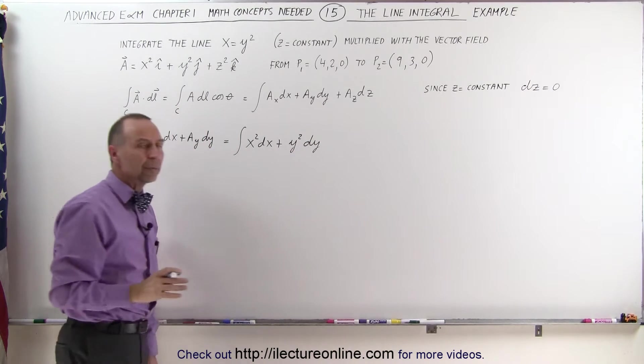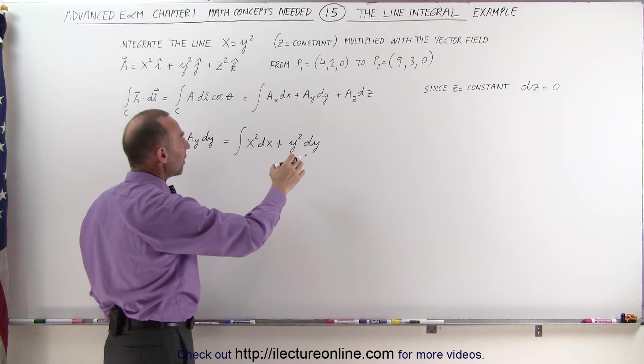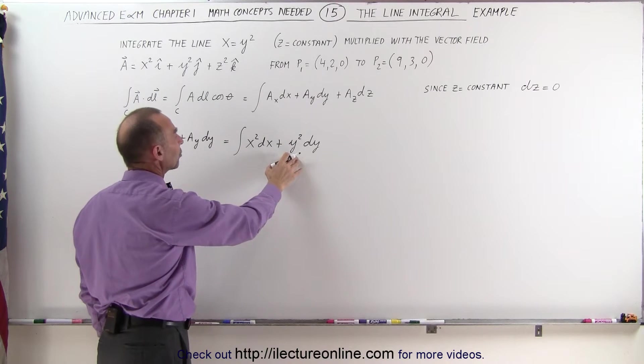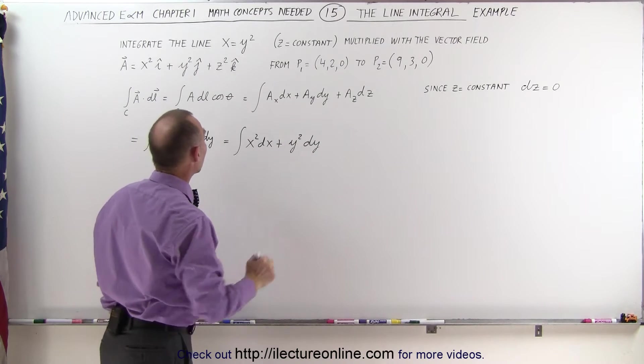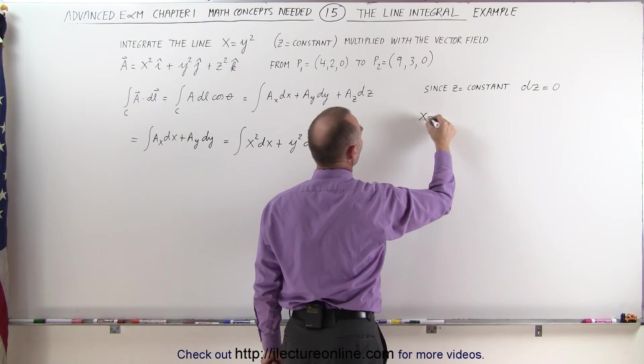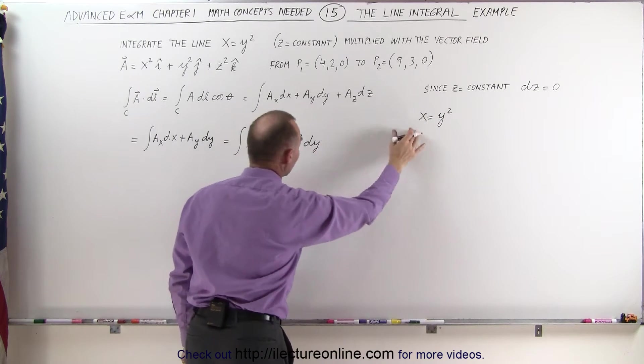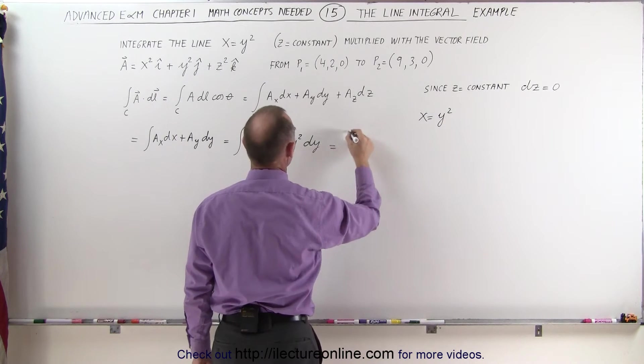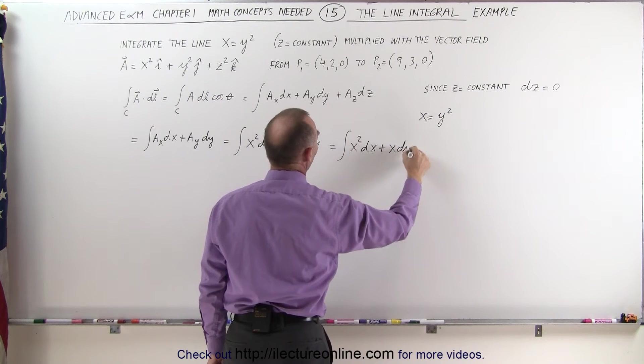Of course, we don't want to integrate an integral where we have two variables, x and y, so we have to somehow replace the y squared with some terms of x and dy as well. Now, since we have this relationship where we know that x equals y squared, we can simply replace the y squared by x, so this then becomes equal to the integral of x squared dx plus x times dy.